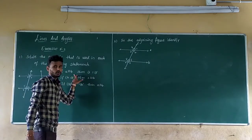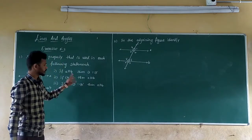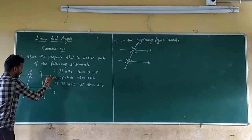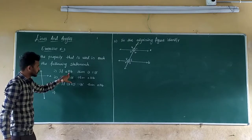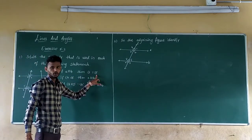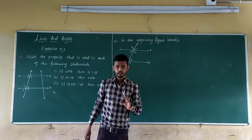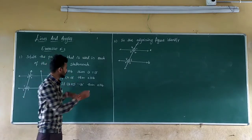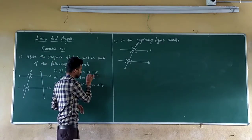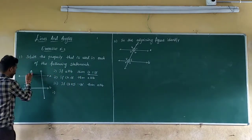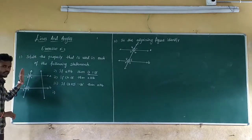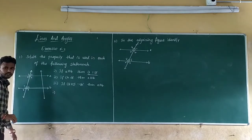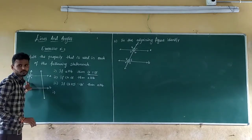You have to identify which property to use for each statement. First question: if line A is parallel to line B, then angle 1 equals angle 5. We need to find what type of angles these are. Angle 1 and angle 5 are on the same side and in the same position — both on the left side and both above the line — so those are corresponding angles. Therefore, if line A is parallel to line B, corresponding angles are equal.